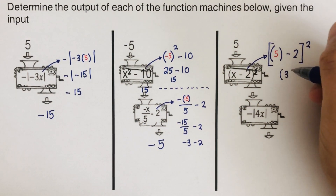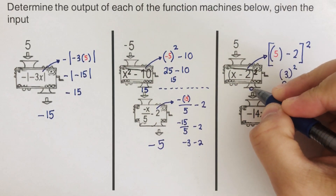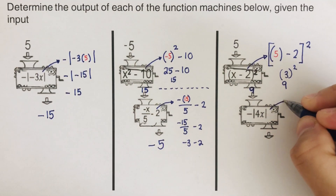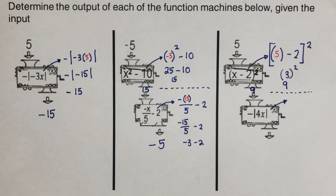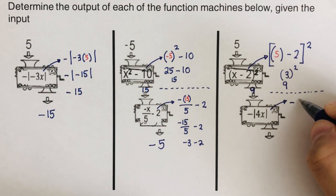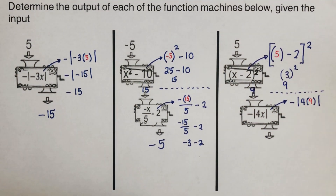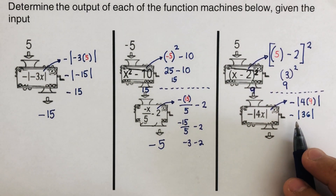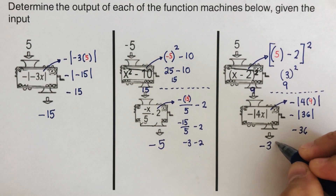3 squared is 9, so the output of the first machine is 9. That 9 becomes the input for the second machine. In the second machine, we have negative of the absolute value of 4 times parenthesis. Remember, change the variable to a parenthesis first before plugging in the input. Our input is now 9, so we get negative of the absolute value of 4 times 9, which is 36. The absolute value of negative 36 is 36, and with the negative outside, the final output is negative 36.